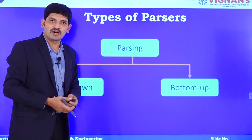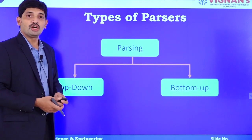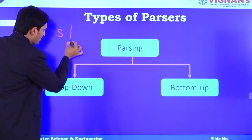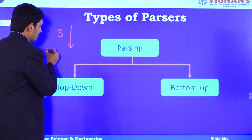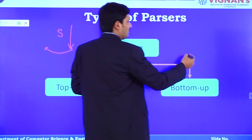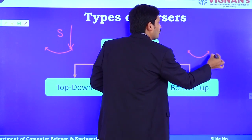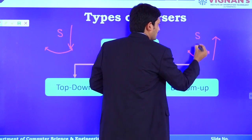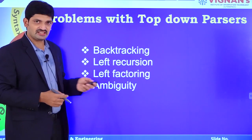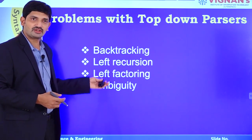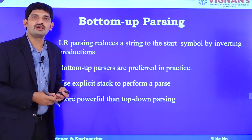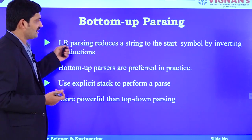Parsing is of two types: top-down parsing and bottom-up parsing. In top-down parsing we start with the start symbol of the grammar and come down to generate the tokens. In bottom-up parsing we start with the string or tokens and move upward to the start symbol. Top-down parsers suffer from problems like backtracking, left recursion, left factoring, and ambiguity. Bottom-up parsing is better because it has no backtracking, no need for left recursion removal, and no need for left factoring.